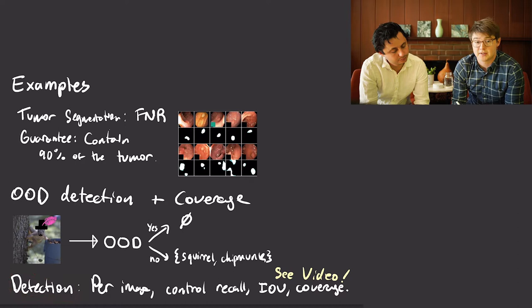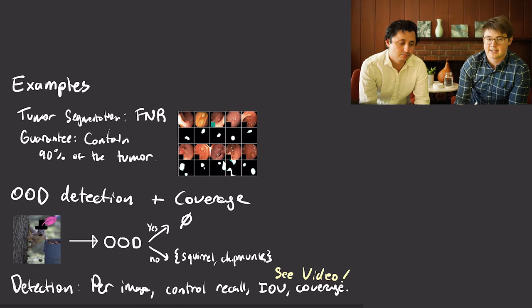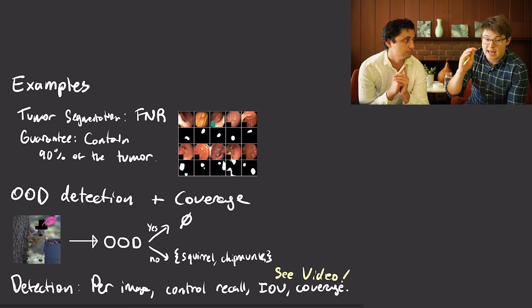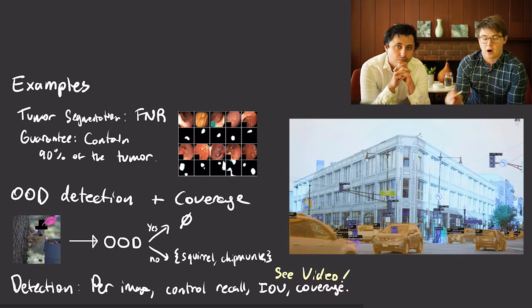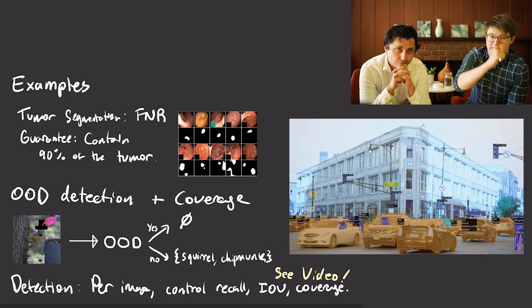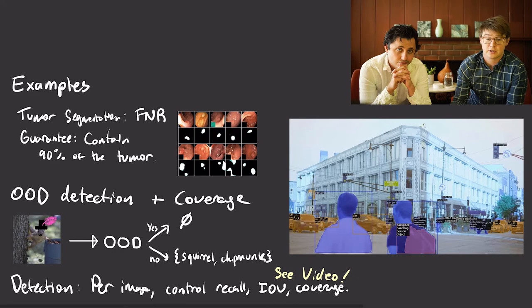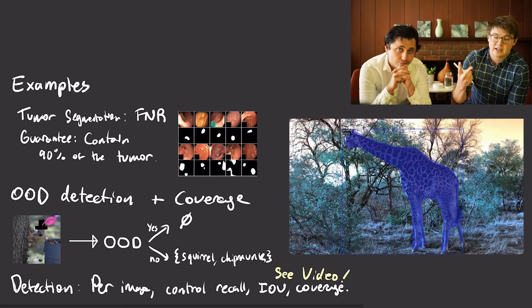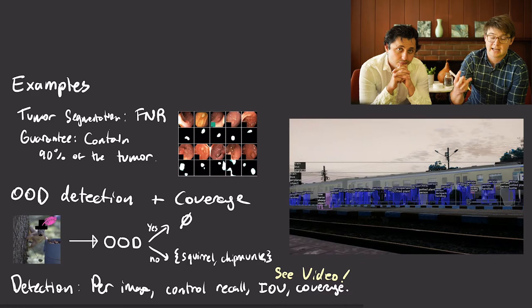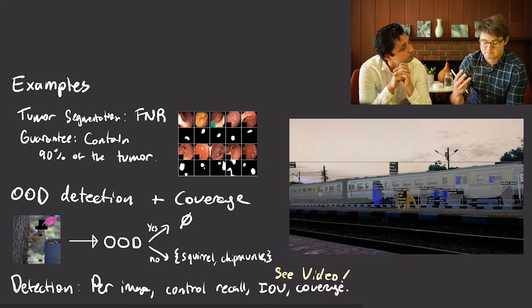As a third example, consider object detection: I hand you an image, and for each image you want to identify distinct objects, segment them by identifying the corresponding pixels, and classify each object. In the video, for every single frame we are outlining the distinct objects and shading them. We're returning a classification prediction set for each of those objects in such a way that I can promise I'm picking up 90% of the objects, with high intersection over union distance on the segmentation masks, and at least 90% coverage on the classification prediction sets.